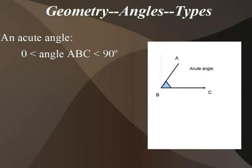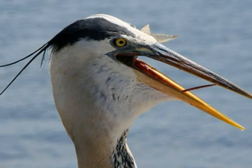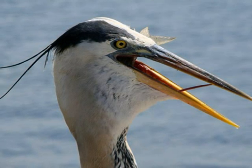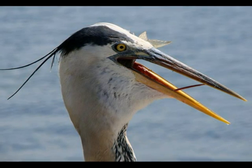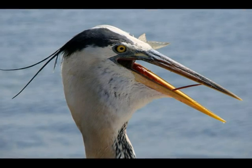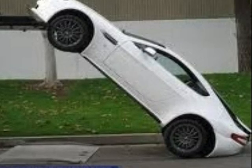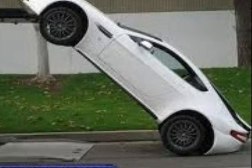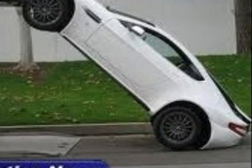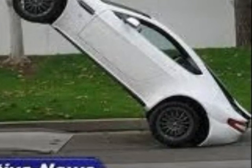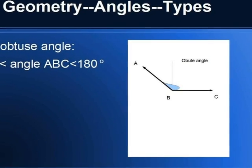Whenever we see something like this, we call it an acute angle. In real life, we can see an acute angle in this bed — the opening is actually an acute angle because it is less than 90 degrees but greater than zero. Another example is the car: the car has been jacked up at an angle which is less than 90 degrees but greater than zero.